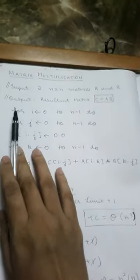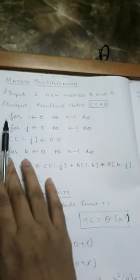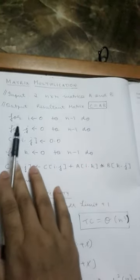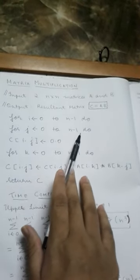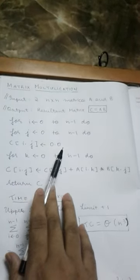Now the outermost for loop represents the number of rows, where i varies from 0 to n minus 1. The inner for loop represents the number of columns, with j varying from 0 to n minus 1. As long as these two conditions satisfy, we have C of i dot j initialized to 0.0.